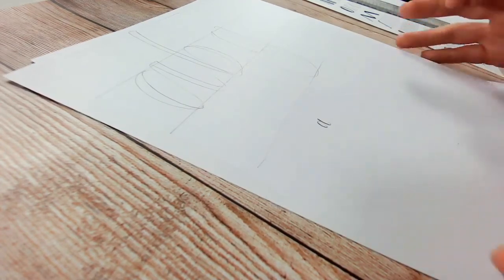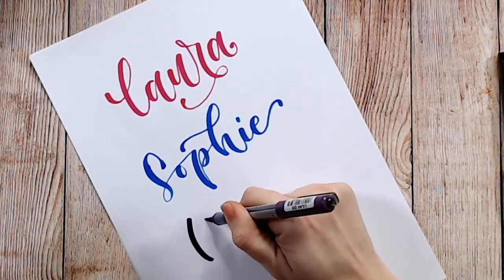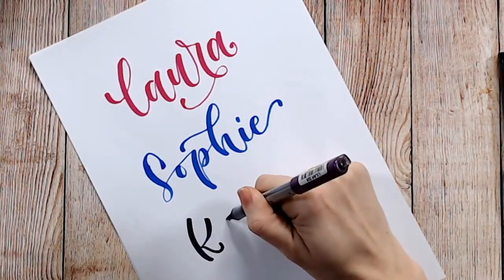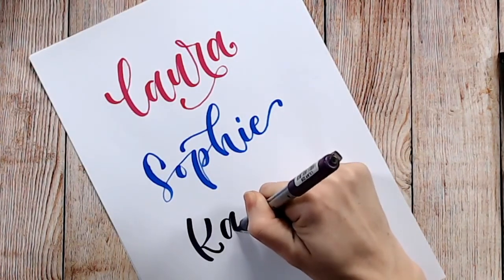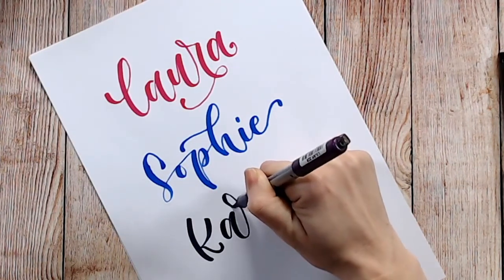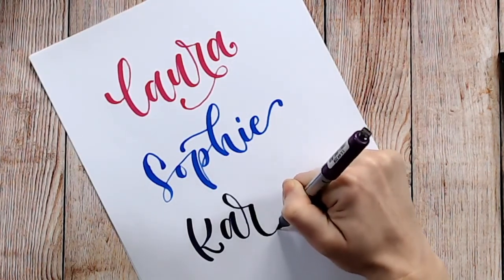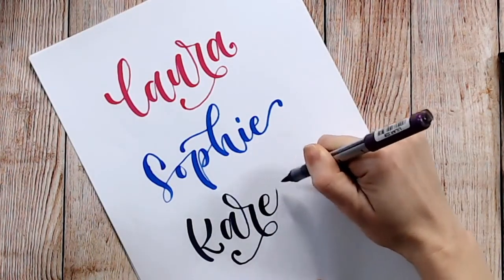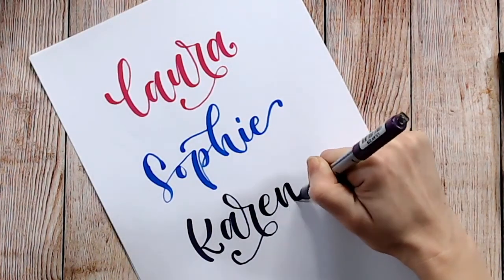Part two of this video tutorial can be found on my YouTube channel and that's where we actually start to learn how to form the brush letters. The links to many of the materials that I've mentioned in this video can be found down in the video description. I look forward to seeing you in part two.